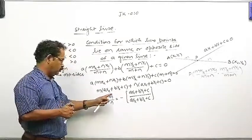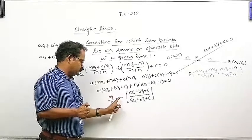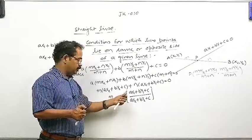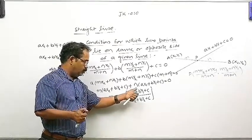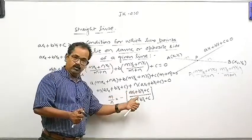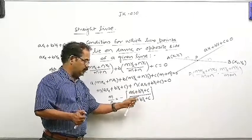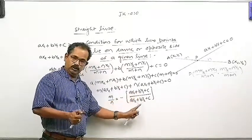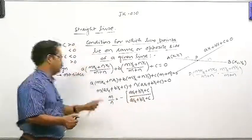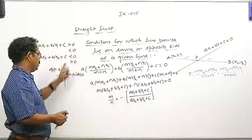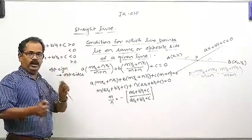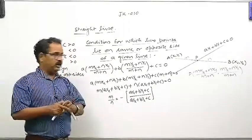M upon n is equal to negative आ रहा है, और माने कि इसका मतलब इसको भी negative होना पड़ेगा. यह negative कब होगा — जब यह negative हो तो यह positive हो, यह positive हो तो यह negative हो. It means opposite sign अगर आएंगे तो point will lie on opposite sides.